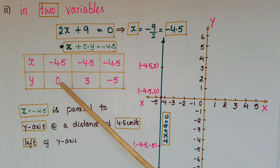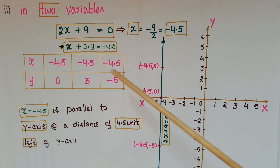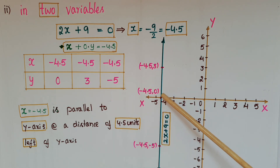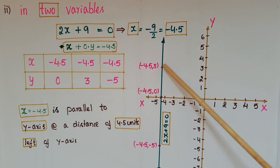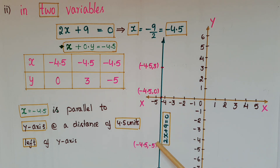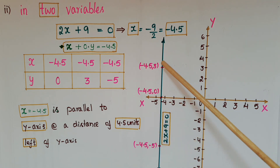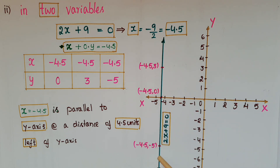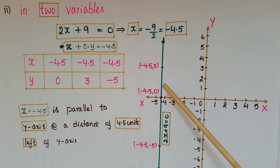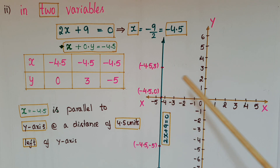Taking y values 0, 3, and minus 5, the points are (−4.5, 0), (−4.5, 3), and (−4.5, −5). Mark these points on the graph and join them — you will get a line. This is 2x plus 9 equals 0, which is parallel to the y-axis at a distance of 4.5 units to the left of the y-axis.